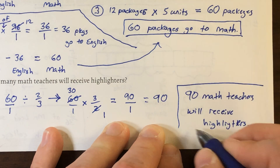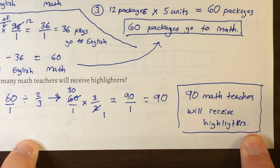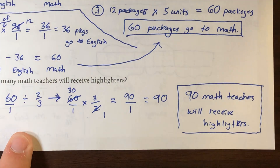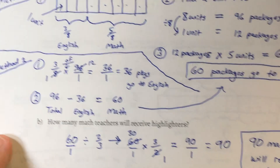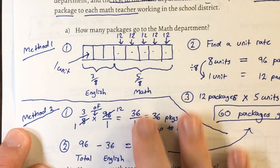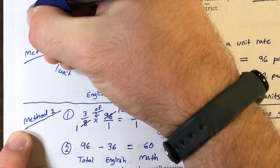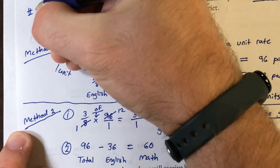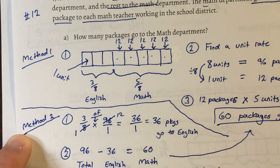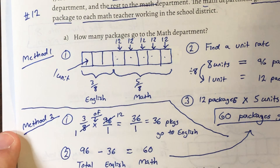If you're using the Math in Focus textbook for sixth grade, this problem — primarily the bar model setup — is going to help you most with number 12 on the assignment.